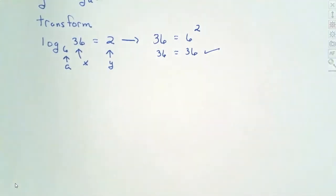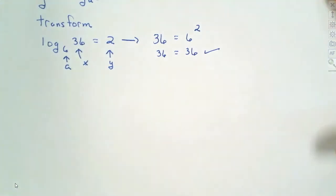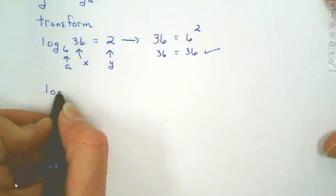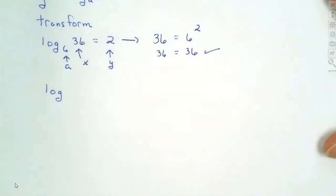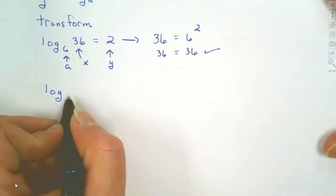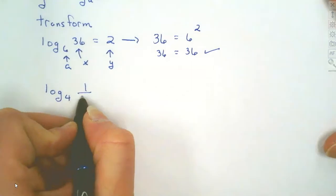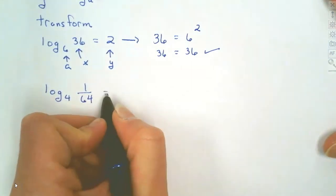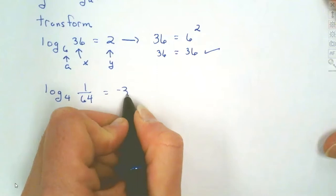We'll do one more of these and then we're going to start solving these when we have to transform it and find the missing part. Let's look at this one and try to transform it: log base 4 of 1 over 64 equals negative 3.